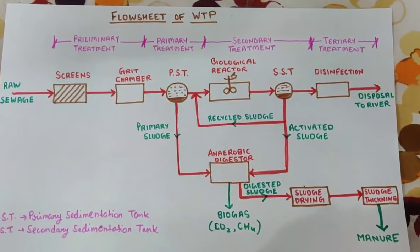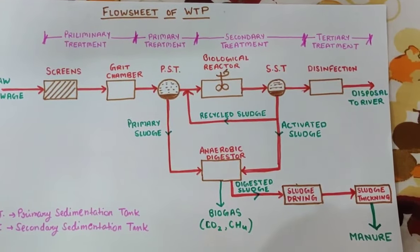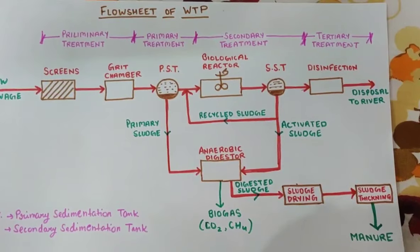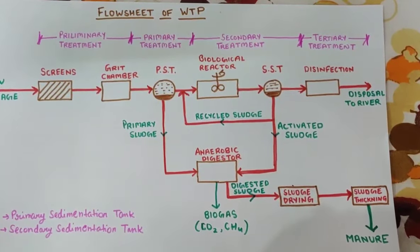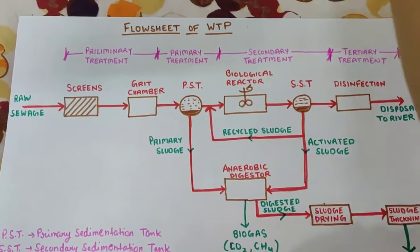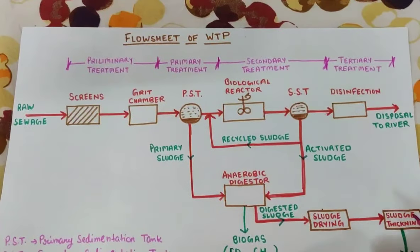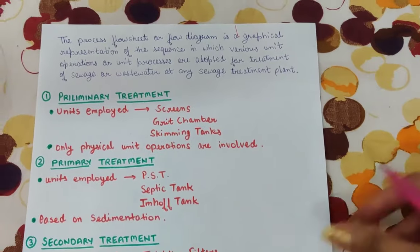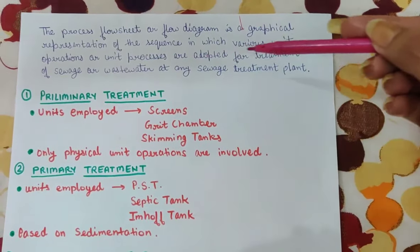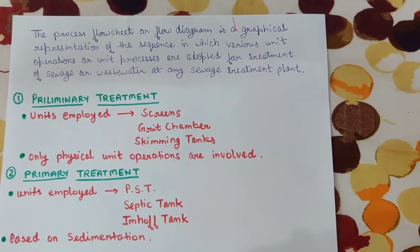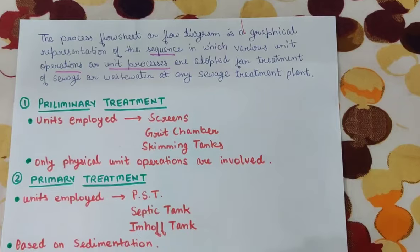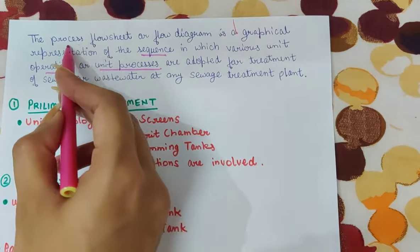Hello everyone. Today's topic is related to the flow sheet of a water treatment plant. A flow sheet means whatever processes will be done in a treatment are shown in graphical representation. We will know how step by step we treat wastewater or sewage in a wastewater treatment plant, i.e., WTP. The process flow sheet or flow diagram is a graphical representation of the sequence in which various unit operations or unit processes are adopted for treatment of sewage or wastewater at any sewage treatment plant.